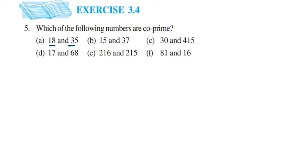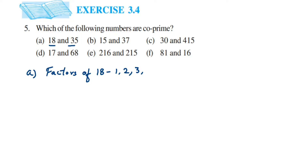Let's start with the first question. We want to find out the factors of 18. Factors means in which all tables 18 goes — those are the factors. So factors of 18 will be: 1, 2 (it's an even number), 3, 6, 9, and 18. It doesn't go in 4, 5, or 8.